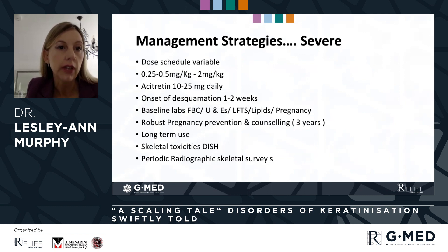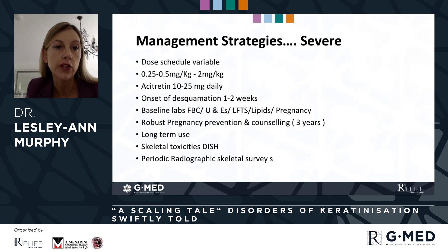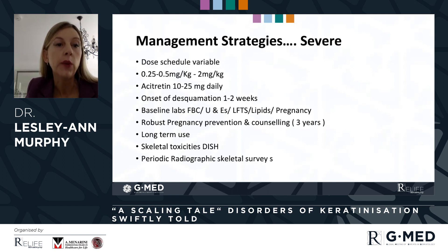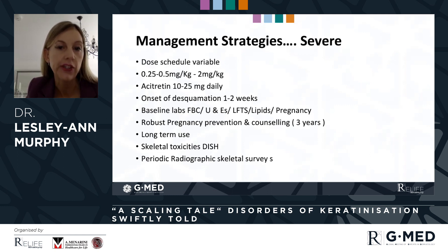The dose schedules are outlined: variable between 0.25 to 2 milligrams per kilogram, tolerance allowing, in the case of isotretinoin; typically between 10 and 25 milligrams in the case of acitretin. Onset of benefit is usually in the first one or two weeks. A robust pregnancy prevention plan in females is required, and in the case of those patients treated with retinoids longer term, to be aware of the risk of skeletal toxicities, DISH-type changes, and that radiographic skeletal surveys may be beneficial in that sense.